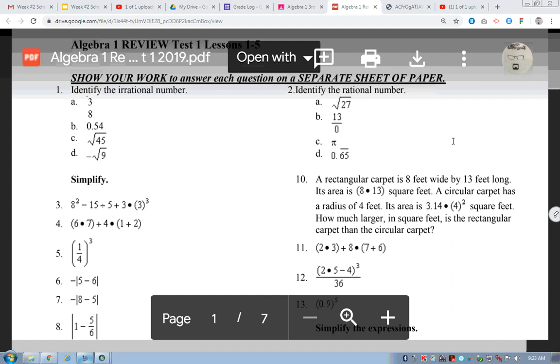The decimal doesn't end, and what else? What else do we know about the decimal? It doesn't repeat. Very good. So we're talking about something when turned into a decimal, whether it's a radical or already a decimal, its decimal is not going to repeat, and it's not going to end.